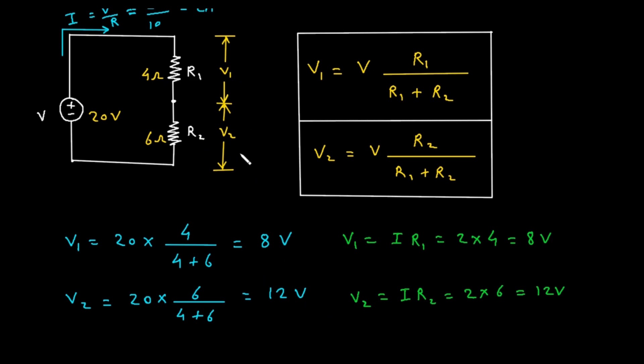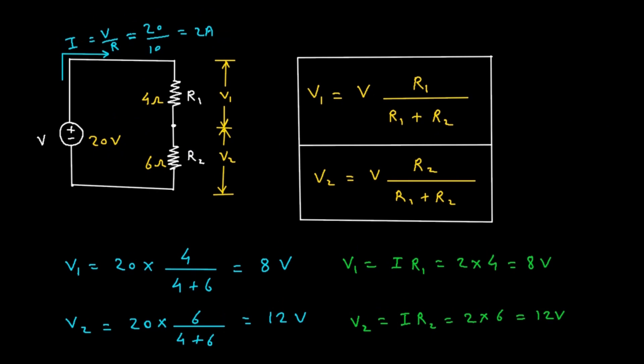Now remember that V1 plus V2 should be equal to V. So here if we calculate V1 plus V2, it is 8 plus 12 and it is equal to 20. So here also the supplied voltage is 20. Hence our answer is correct.